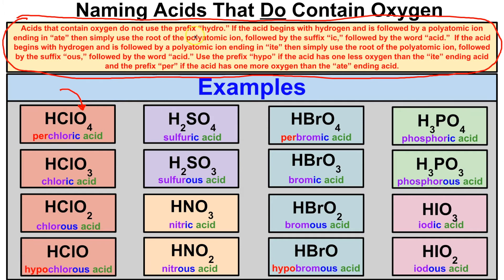Acids that contain oxygen do not use the prefix hydro. If the acid begins with hydrogen followed by a polyatomic ion ending in -ate, use the root of the polyatomic ion followed by the suffix -ic and the word acid. If the polyatomic ion ends in -ite, use the root followed by the suffix -ous and the word acid. Use the prefix hypo if the acid has one less oxygen than the -ite ending acid, and the prefix per if it has one more oxygen than the -ate ending acid.